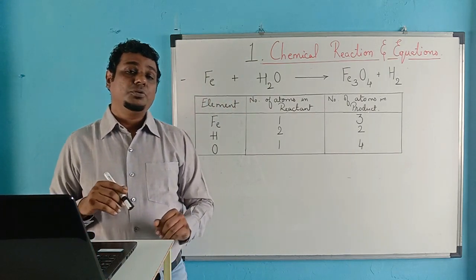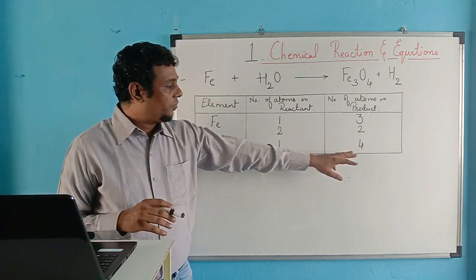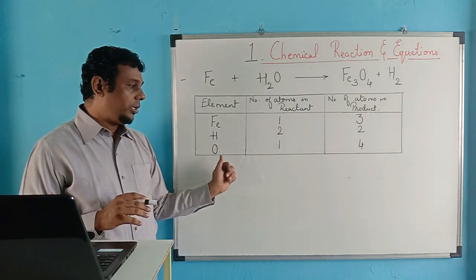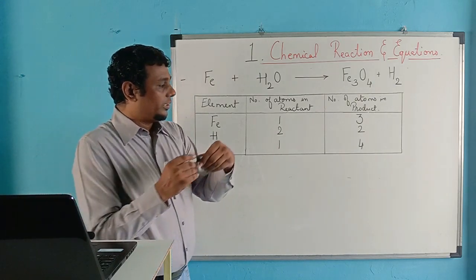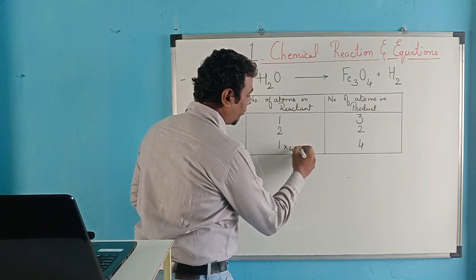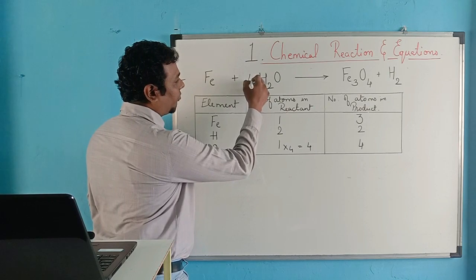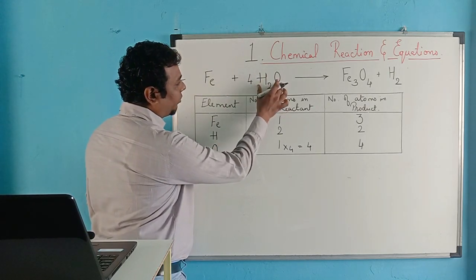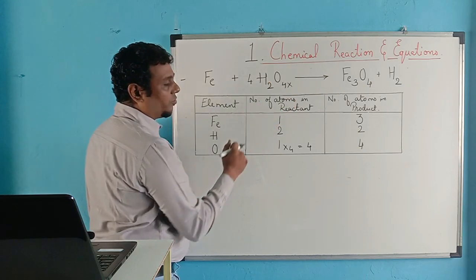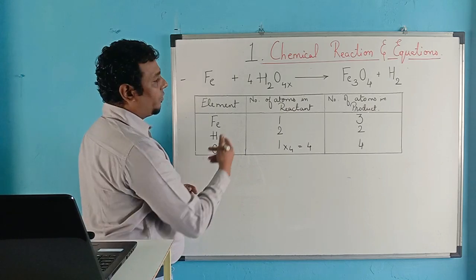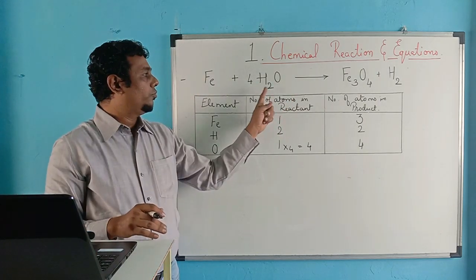The first thing to identify is the highest number of atoms — here it is oxygen with four atoms in the product, while in the reactant it is one. The simplest step is to multiply the water molecule by four, making oxygen four in the reactant. You must write the four as a coefficient in front of the whole compound H2O, not as a subscript inside the formula — that would change water to H2O4, which is not water.